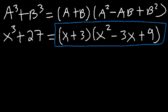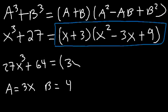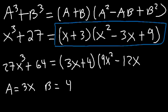Try this one: 27x³ plus 64. Here a is the cube root of 27x³, which is 3x, and b is the cube root of 64, which is 4 (since 4×4×4 is 64). So a plus b is (3x plus 4). Then a squared is 9x², ab is 3x times 4 which is 12x, and b squared is 4 times 4 which is 16. So the answer is (3x plus 4)(9x² minus 12x plus 16).